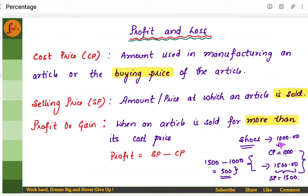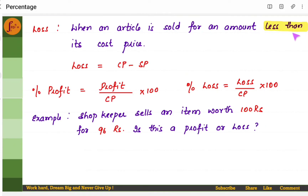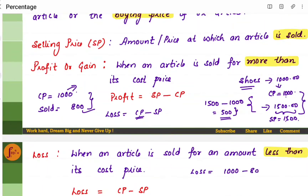On the other hand, say the manufacturing cost of the shoes is 1000 rupees and he sold them for 800 rupees. Cost price is 1000 rupees and he sold it for 800 rupees to the customer. The selling price is lesser than the cost price — he sold it for less than the actual price — so there is a loss for him. Loss becomes cost price minus selling price. Loss is incurred when an article is sold for an amount less than its cost price. In this example, loss is 1000 minus 800, which is 200 rupees.